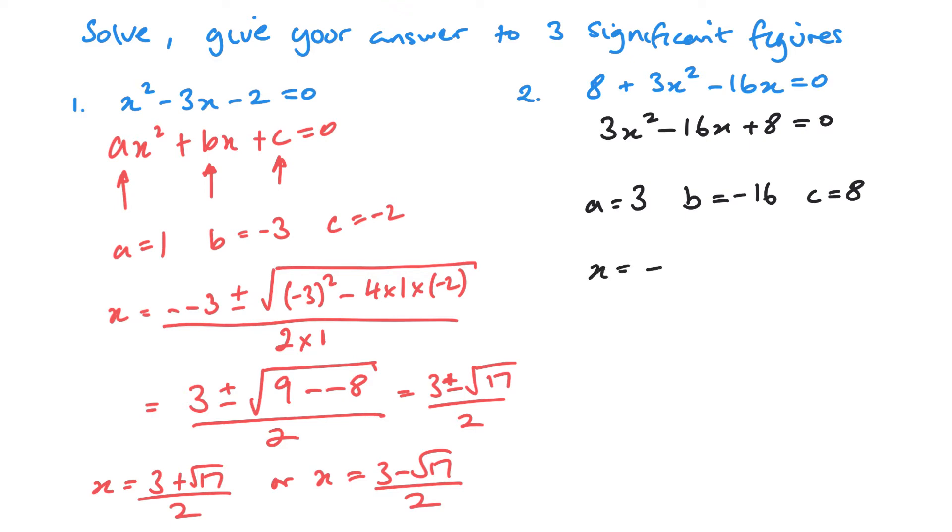And then it's a matter of just substituting in to my formula. So minus B, so we actually got minus minus 16, plus or minus. So now we've got 16 squared minus 4 times A times C, all over 2 lots of A. So that gives me 16 plus or minus the square root. Let's actually give it simplified. So square root of 160, which is 4 root of 10, and it's over 6.